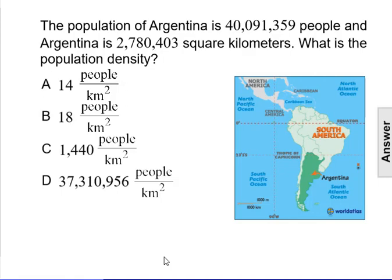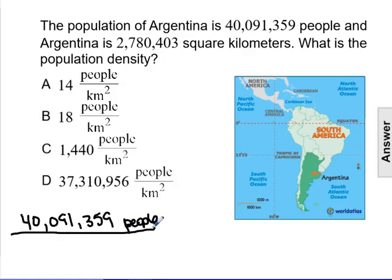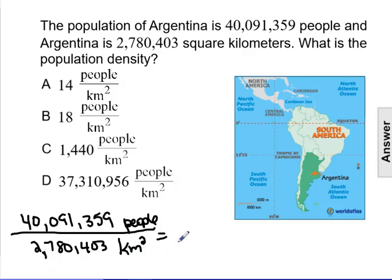Population density is a unit rate of people per square kilometer. So here we have 40,091,359 people, and we're comparing that to 2,780,403 square kilometers. If we want to find a unit rate, we need to divide those two numbers. So 40,091,359 divided by 2,780,403 is 14, so that would be 14 people per square kilometer.